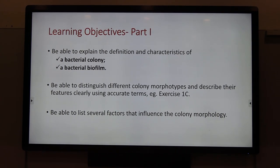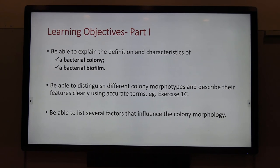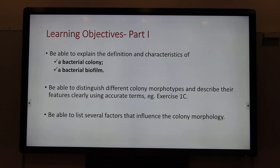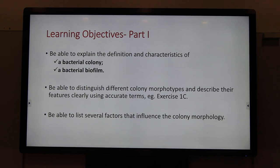This is a learning objective of part one. After this part, you are expected to be able to explain the definition and characteristics of a bacterial colony and a bacterial biofilm. Be able to distinguish different colony morphologies and describe their features clearly using accurate terms — for example, in your exercise 1C. And be able to list several factors that will influence the bacterial colony morphology.